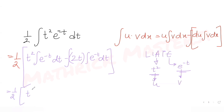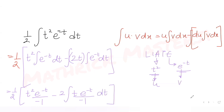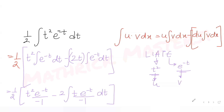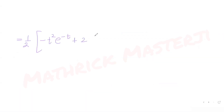Integrating e raised to minus t gives e raised to minus t over minus 1. So I get half of: minus t square e raised to minus t, minus 2 times the integral of t times e raised to minus t dt. The two negatives combine to give plus 2 times the integral of t e raised to minus t dt. I now apply the product rule a second time to this remaining integral.